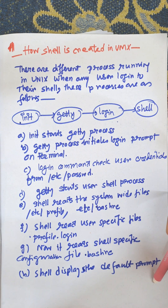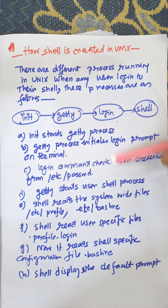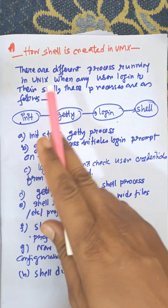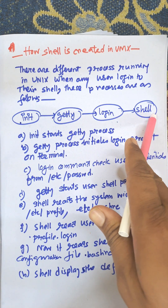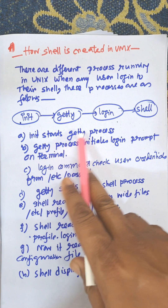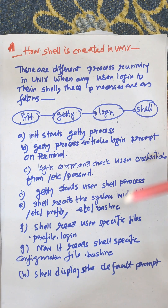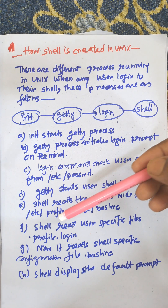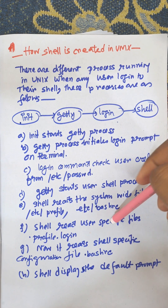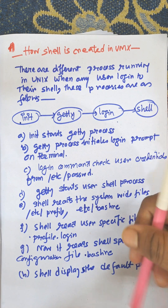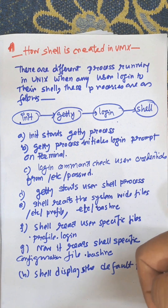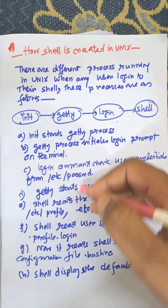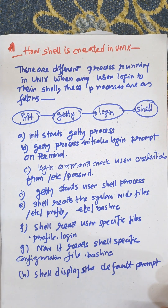Then the shell displays the default prompt. So these are the steps of creating a shell: init calls getty, getty calls login, login starts the shell. The shell checks credentials via username and password, reads system files, reads user-specific configuration files, and then displays the prompt — which can be a dollar sign or any other prompt set by the system.